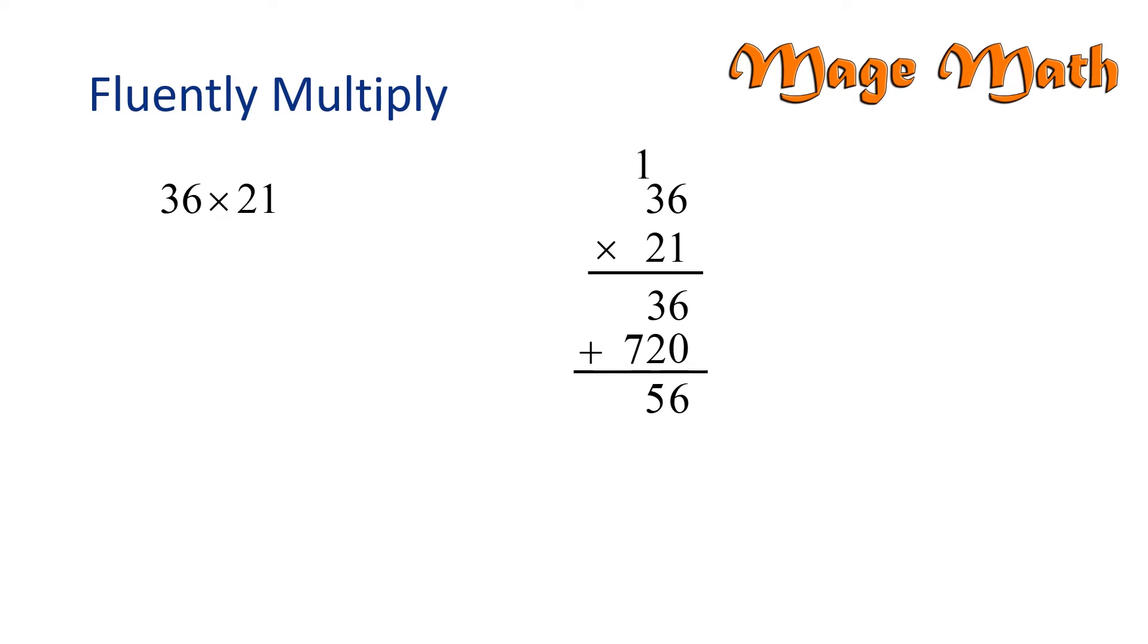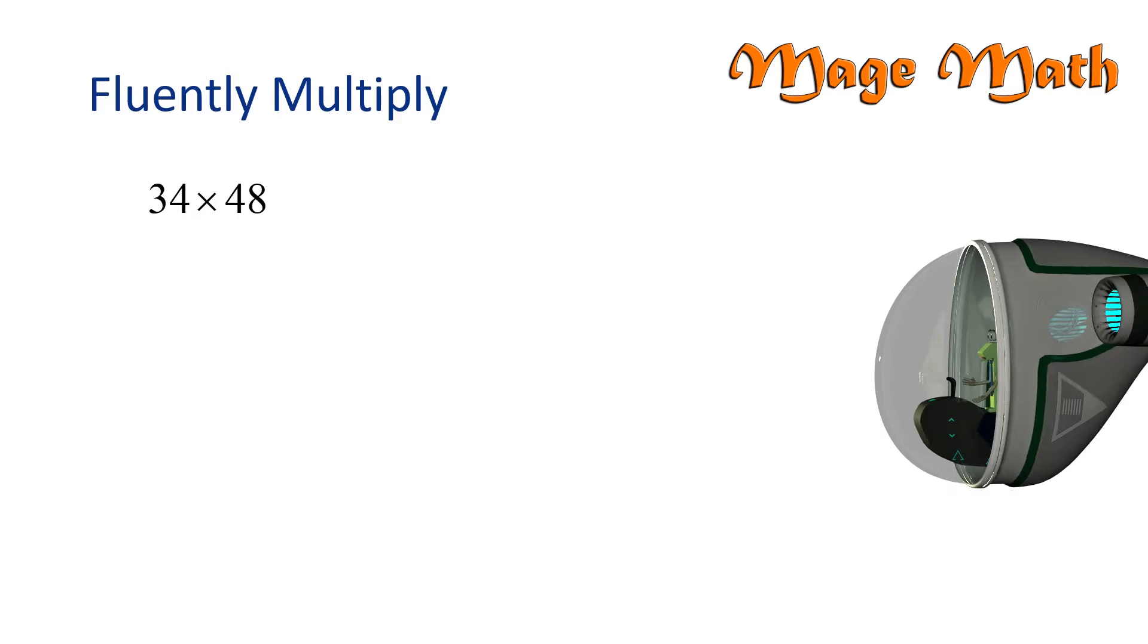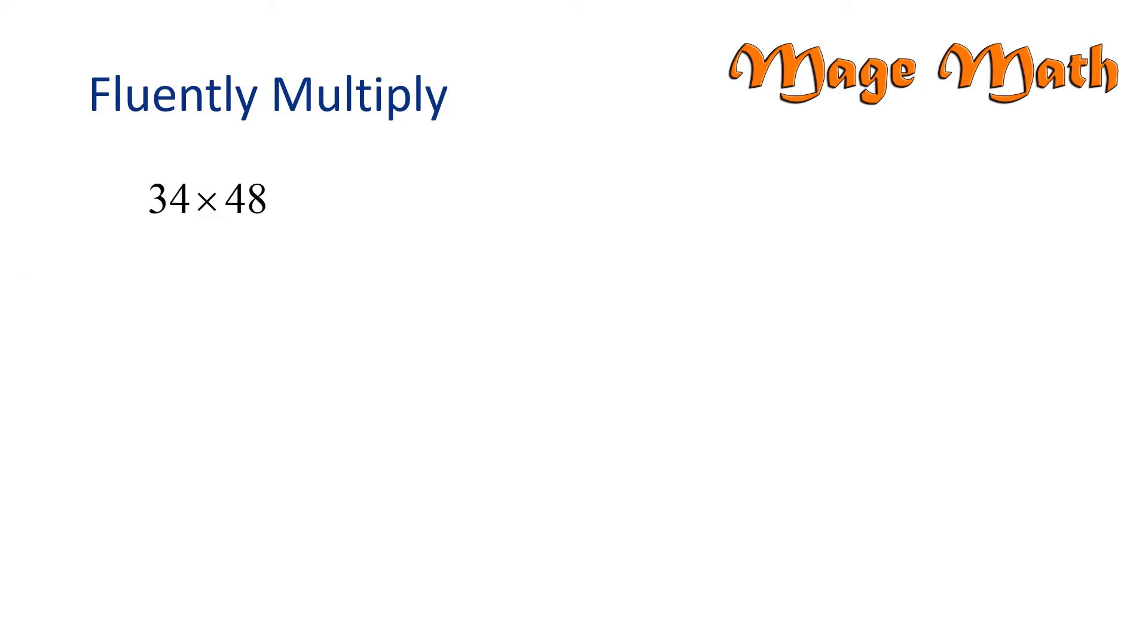And then finally we can just bring down the seven because there isn't anything to add to it. This means we found that thirty-six times twenty-one equals seven hundred fifty-six. Great job! Let's try another problem.